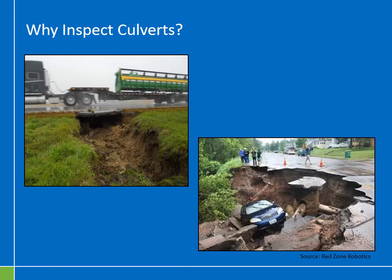So why do we inspect culverts? A robust inspection program certainly requires an organization's commitment and resources. The dramatic answer is to avoid issues like we're seeing on the slide here — two examples of roads that have been damaged because of the pipe below. In short, we want to inspect because often the cost of proactively addressing these issues is significantly less than the cost of an emergency repair.